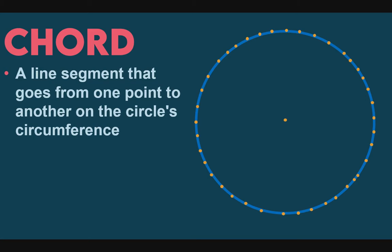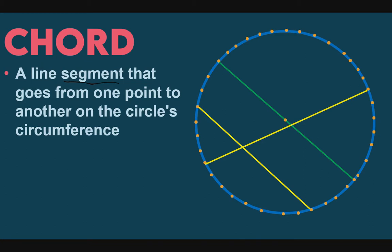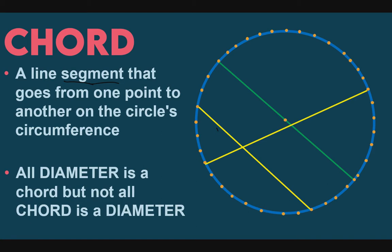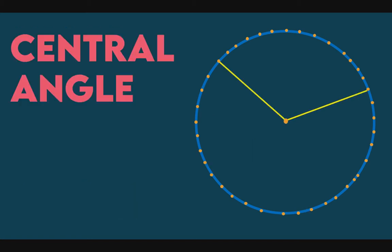Next, let us define chord. A line segment that goes from one point to another on the circle's circumference. So a chord is a segment whose endpoints are on the circle. The diameter is also a chord. But the yellow chords here are not diameters — because they do not pass through the center. So all diameters are chords, but not all chords are diameters.